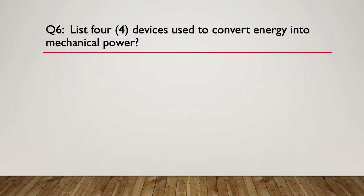Question six. List four devices used to convert energy into mechanical power. Any form of energy being converted into mechanical type power. See if you can list four of those. Pause here. Now, for your answer. Oh sorry, your hint. We're looking for prime movers. One is a petrol engine, for example. Pause here again.